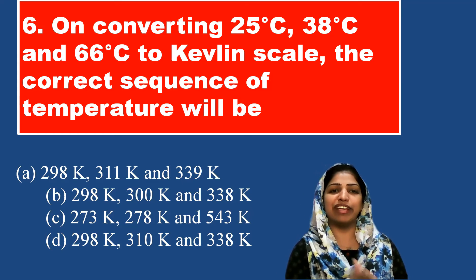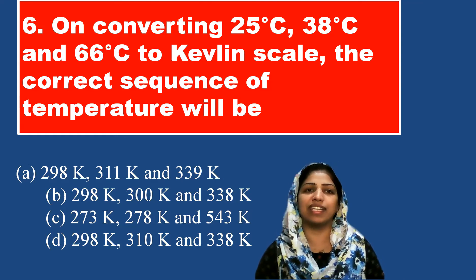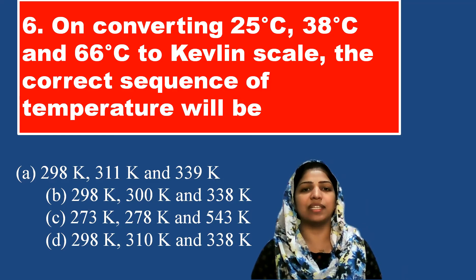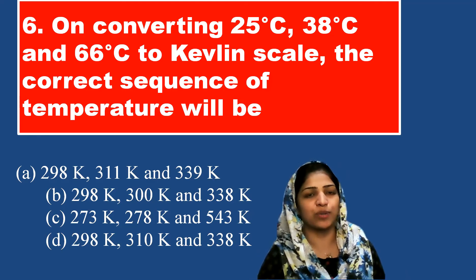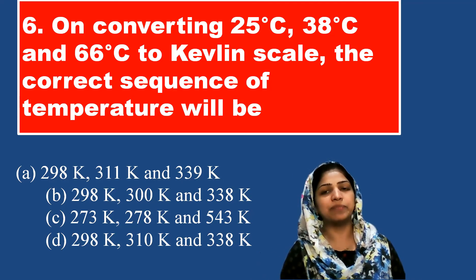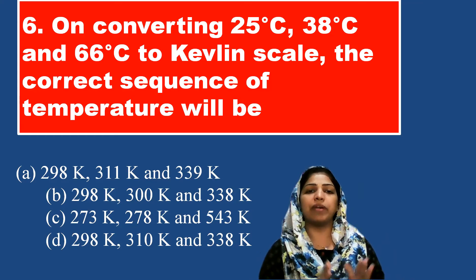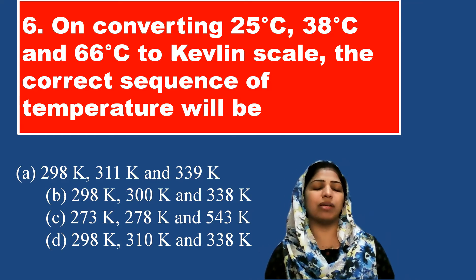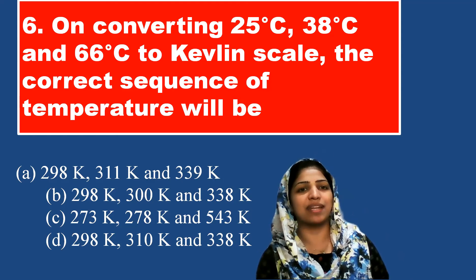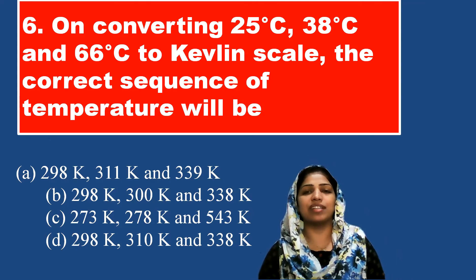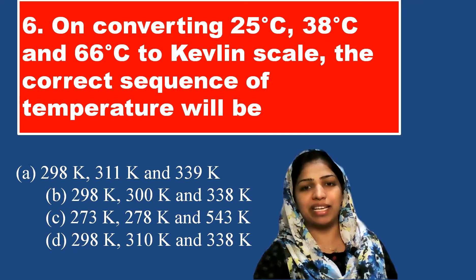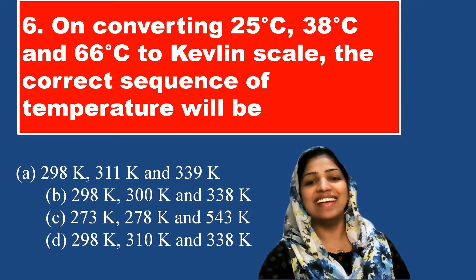If we compare option A with 311 Kelvin, we can identify the correct option. The degree Celsius to Kelvin conversion is done by adding 273. So the correct option can be identified by verifying all three converted values.